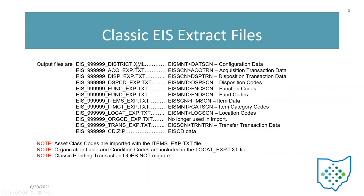This is a crosswalk of the extract files and what data in EIS each one is pulling from. The XML file is pulling from the configuration data in the EIS main data screen. Your acquisition information comes from the acquisition transaction information. Your disposition transaction extract is from EIS screen as well. Your disposition codes are pulling from EIS main. Same thing with the function and fund codes — those are coming from EIS main as well.